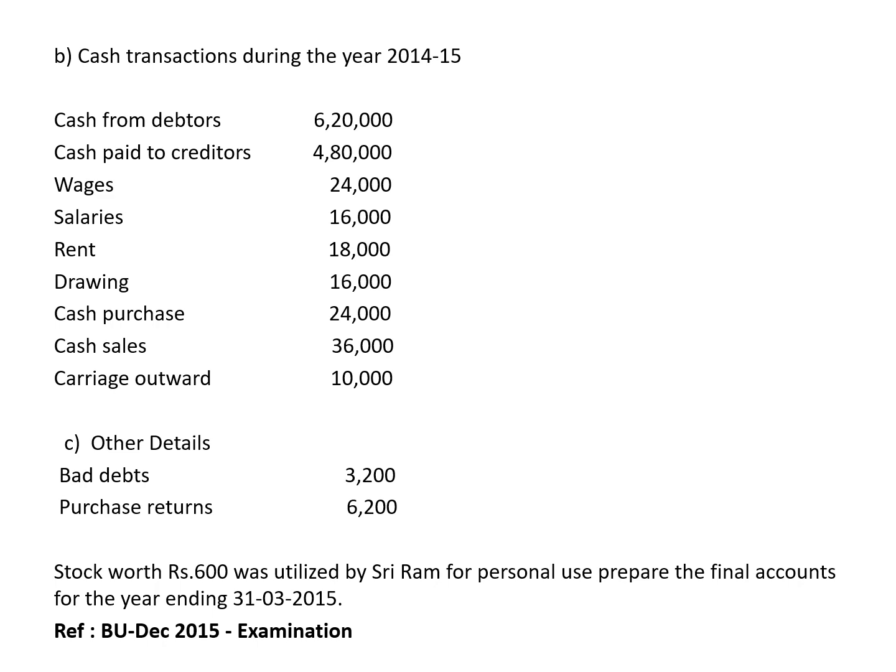Carriage outwards 10,000 — goes to P&L account as an expense and to cash account. Note: if carriage inwards were given, it should be taken to the trading account. Carriage outwards goes to cash account and P&L account.